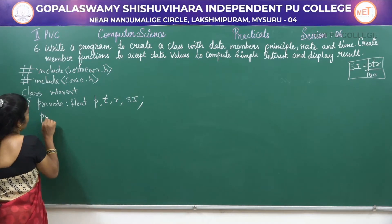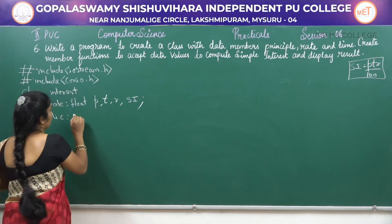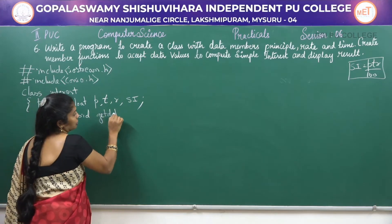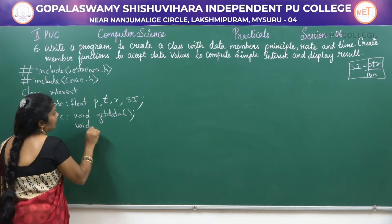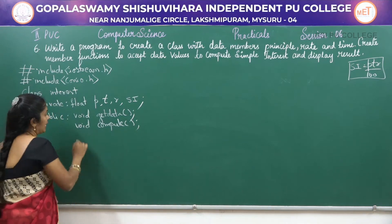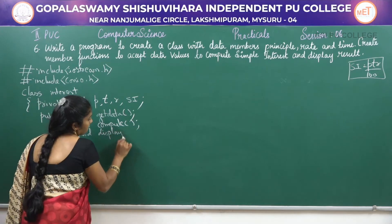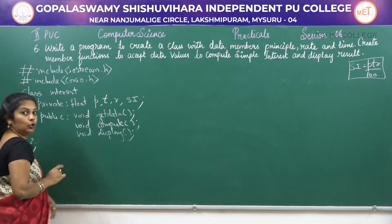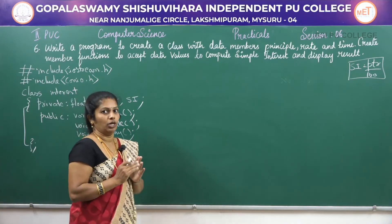Then, in the public section, declare the functions. The first function, for input purpose, is void getdata. The next function, for calculation purpose, is void compute. And the last function is void display. Then close the class — after the flower bracket, compulsory put a semicolon to close the class.